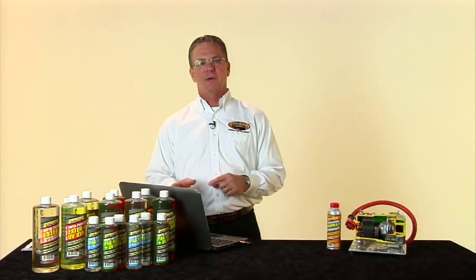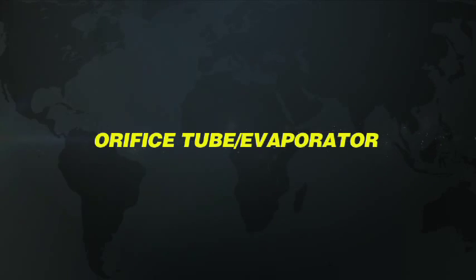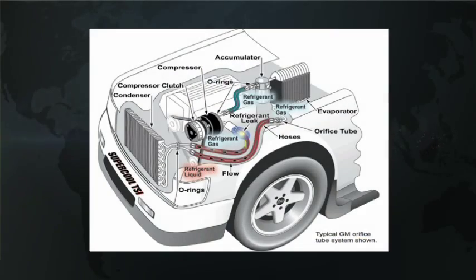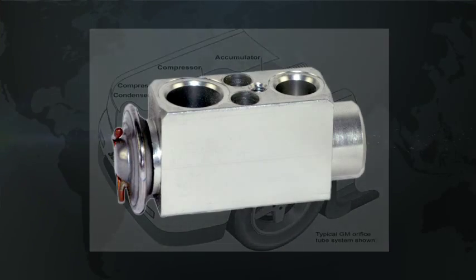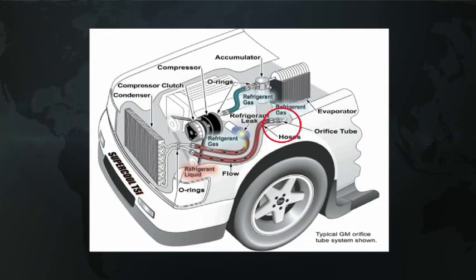Let's take a look at the orifice tube — or in a lot of the newer vehicles, you're going to have an expansion device. You can see the circle around it on screen. Basically, that component is metering the flow of refrigerant into the evaporator, so it plays a critical role. Anytime you're replacing a compressor in a system, you're going to replace the orifice tube if it's an orifice tube system. If it's an expansion device, you're either going to service it and put it back in, or replace it.